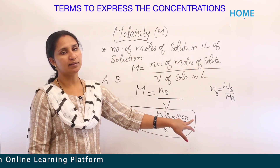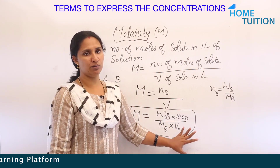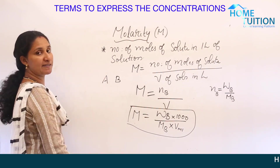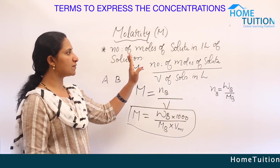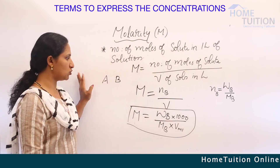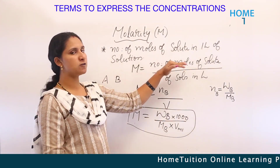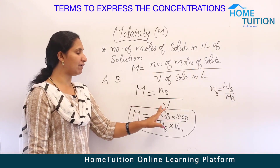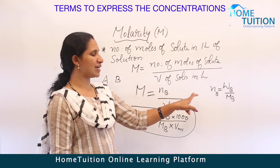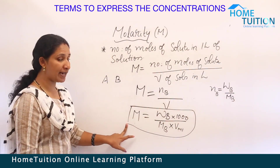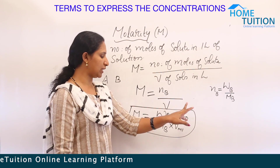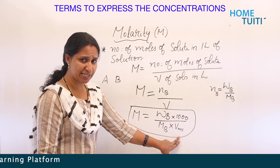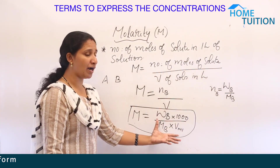If volume is given in milliliters, multiply by 1000; if given in liters, no multiplication is needed. To summarize: molarity is represented by capital M, equals the number of moles of solute in one liter of solution. M equals NB divided by V, and molarity equals WB into 1000 divided by MB into V_mL when volume is in milliliters.